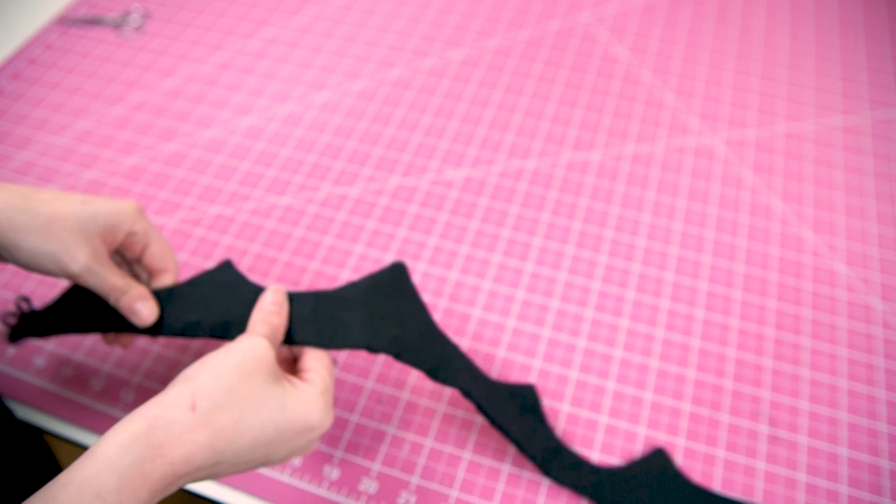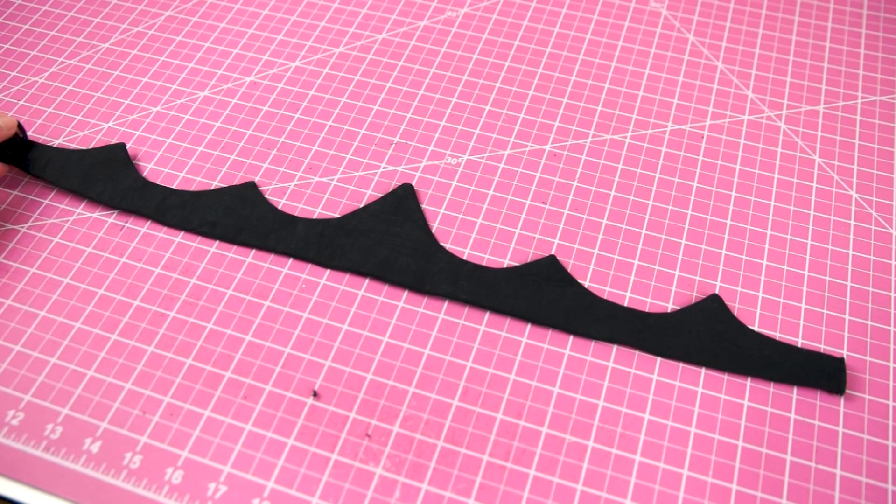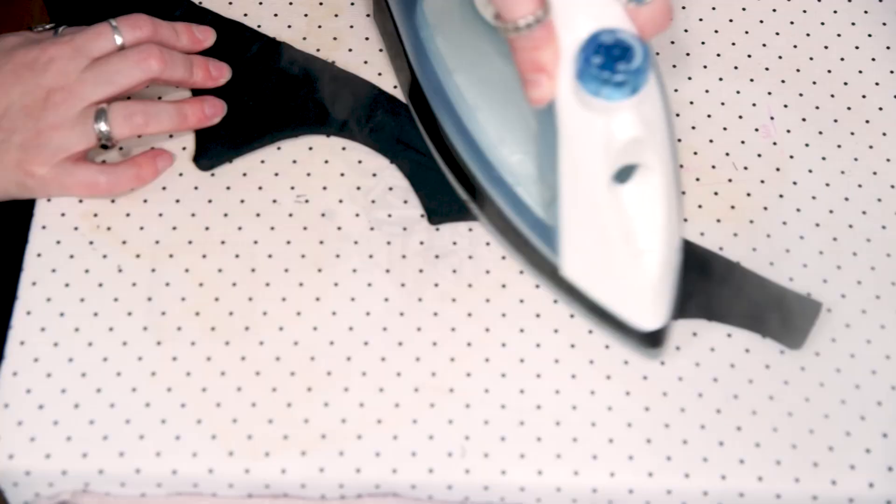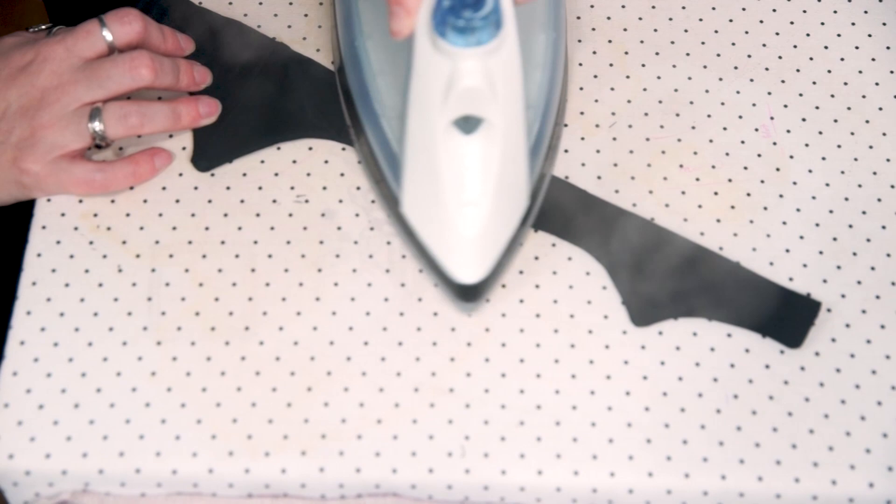Once your piece is fully turned, the next step is to press it with an iron. Be very thorough, making sure your edges are nice and flat and crisp. Crisp is the key word for the turning and pressing steps.